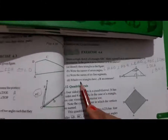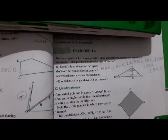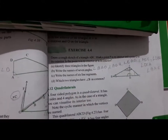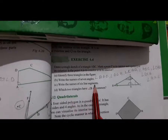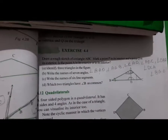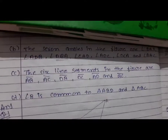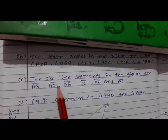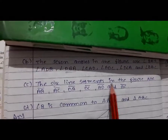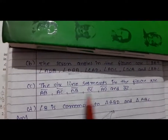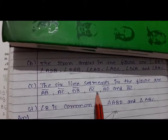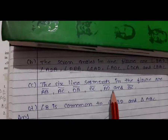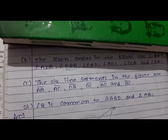So the six line segments in the figure are AB, AC, DB, DC, AD, and BC.